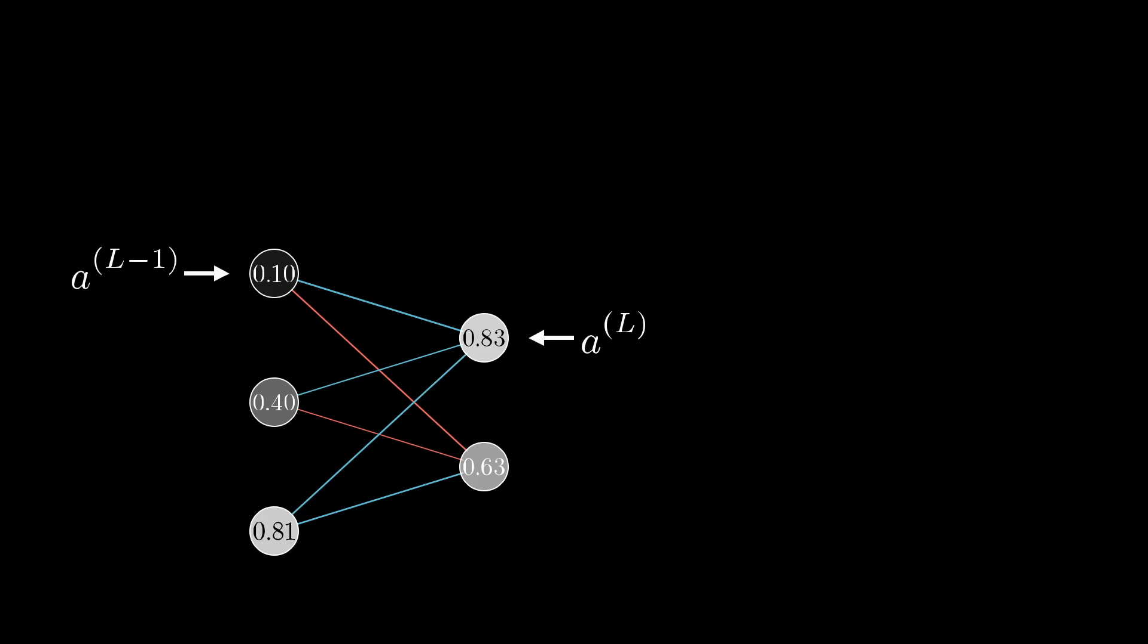Rather than the activation of a given layer simply being a^l, it's also going to have a subscript indicating which neuron of that layer it is. Let's go ahead and use the letter k to index the layer l-1, and j to index the layer l.